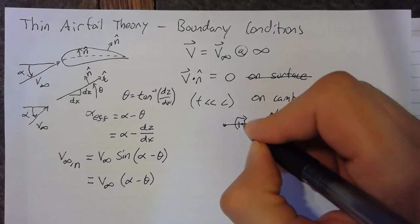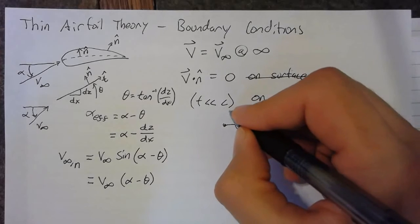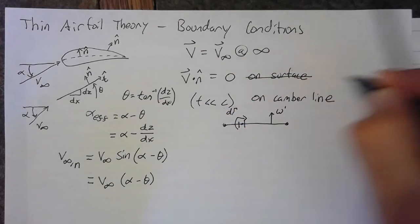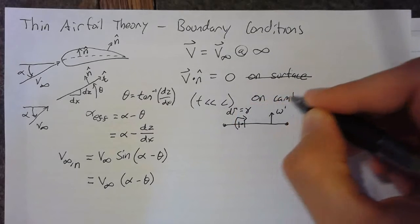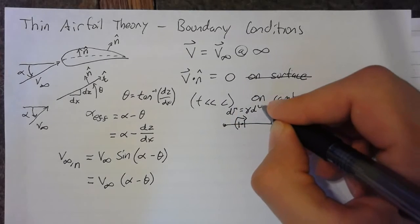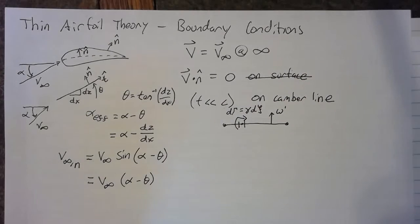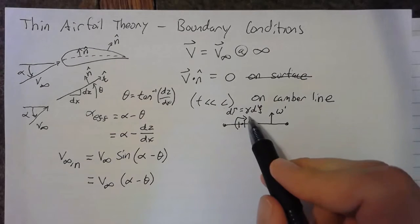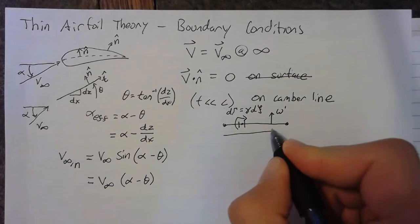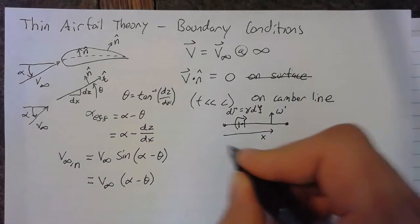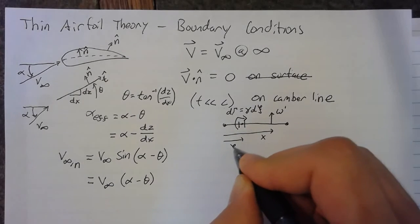So, remember that each part of this is going to have some differential circulation, which is equal to gamma times this differential length. And gamma, again, is the local strength of this vortex sheet. And we will say that this is some distance x and this is some distance xi.